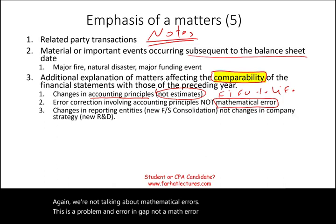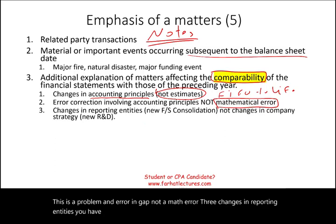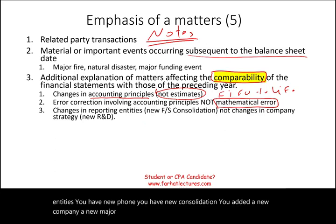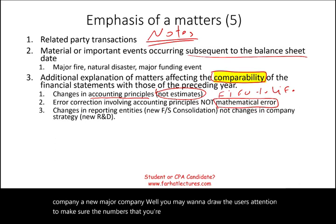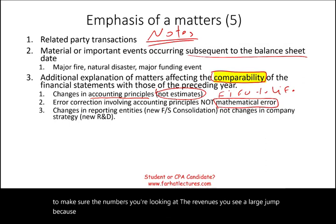Under comparability, a second example is an error in GAAP — not a math error. Third is changes in reporting entities: if you have a new consolidation, you added a new major company. You may want to draw the user's attention to make sure they understand the numbers — for example, a large jump in revenues — because you are now consolidating new entities.